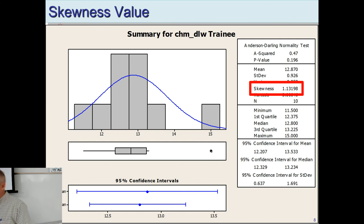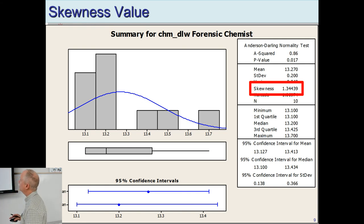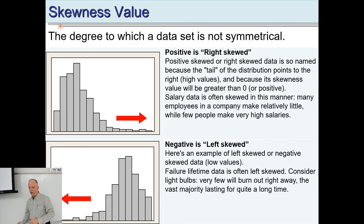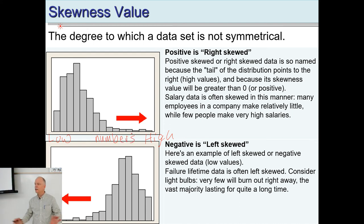Now let's look at skewness. The trainee data has a skewness of 1.13, and the forensic chemist data has a skewness of 1.3 — quite a bit more. Notice how most of the data points are on the left and it trails out to the right. Whichever way it tails, that's the sign on skewness. If it's tailing toward high values, that's a positive skew; toward low values, that's a negative skew.